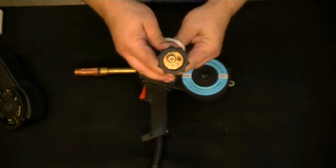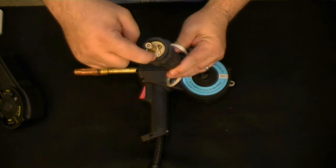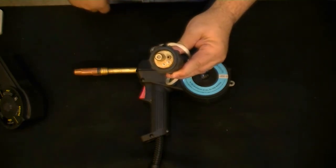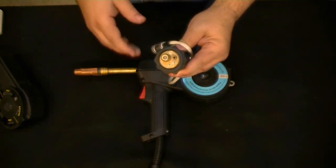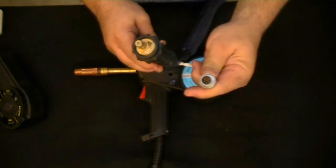The Everlast spool guns utilize the main Euro gun connection and pick up both gas and power from the common connection. Control of the wire feed mechanism is offered through a separate remote connection, featured here.